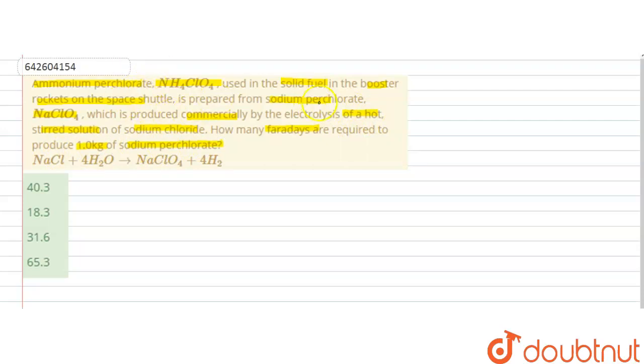In this question it is given that ammonium perchlorate, which is used as a solid fuel in the rockets, is prepared from sodium perchlorate, NaClO4, which is produced commercially by the electrolysis of sodium chloride hot solution. Now we are being asked how many Faraday's are required to produce one kilogram of sodium perchlorate. This reaction is given: